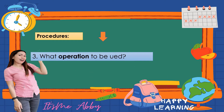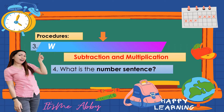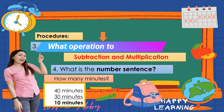For the third step, what operation is to be used? The operation we need is subtraction, because we are getting the difference in time, and also multiplication. Fourth, the number sentence: to find the minutes, 40 minutes minus 30 minutes equals 10 minutes.